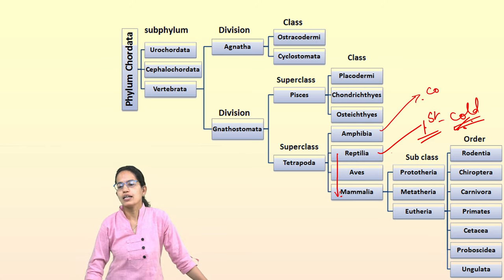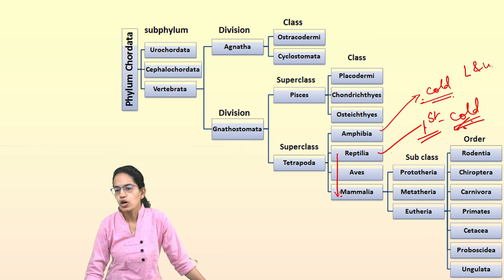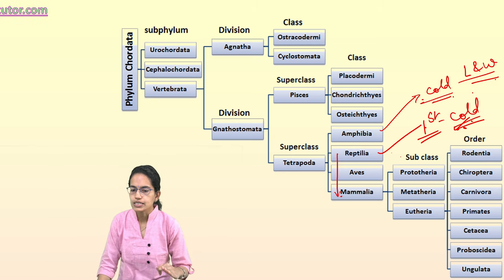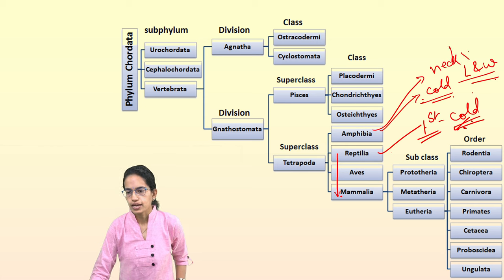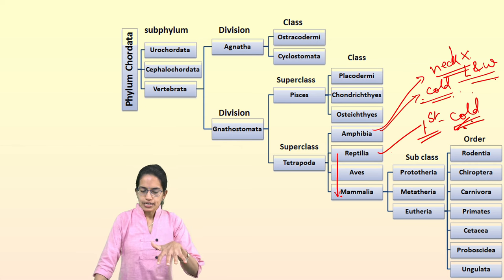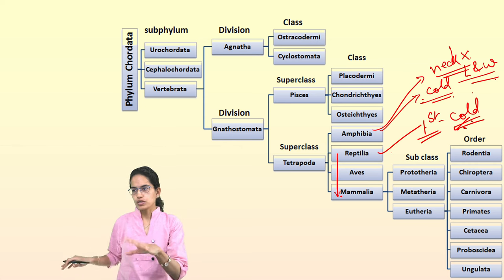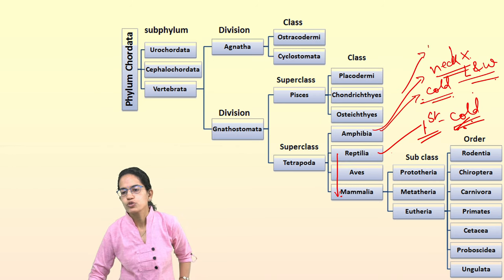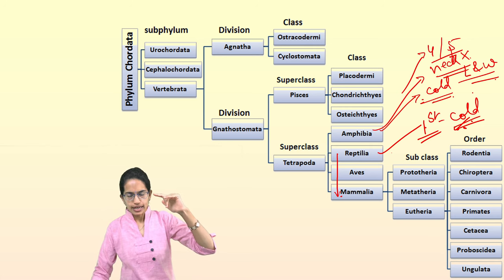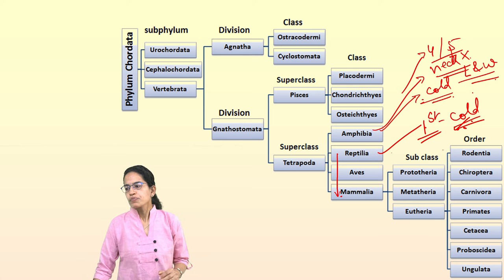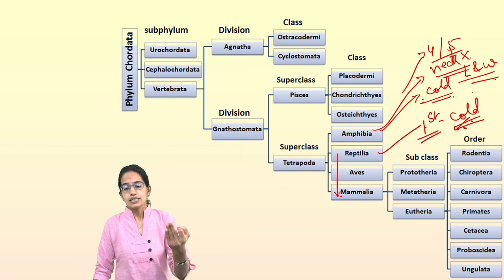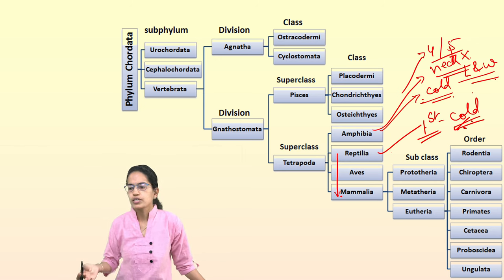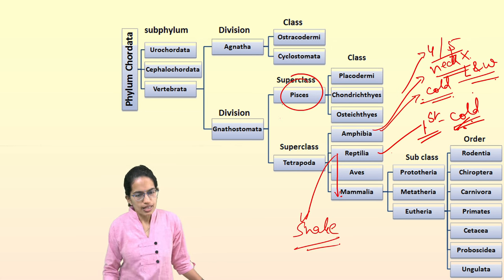Amphibia are cold-blooded animals with the capability to live both on land and water. The body is divided into head, trunk and tail. Very importantly, neck is absent in amphibia — neck was present in reptiles. The front limbs have four toes and the back limbs have five toes. They have a nictitating membrane on their eyelids to protect their eyes when diving into water. Moisture glands are present and the skin is without scales. Common examples are frog, toad and salamander.